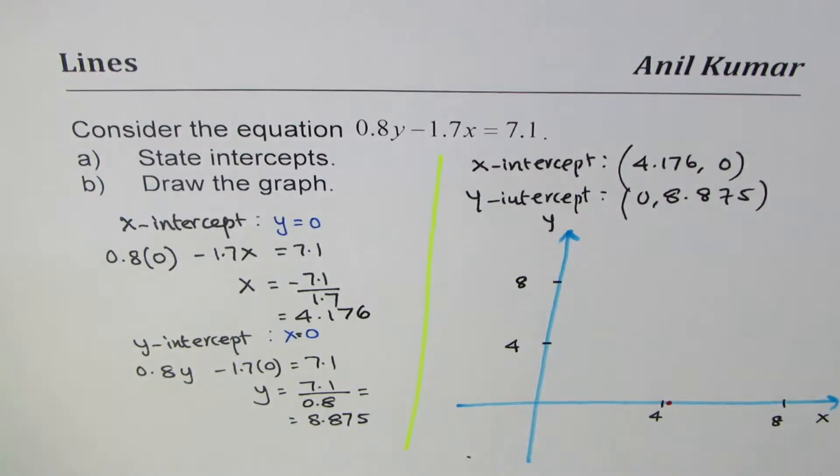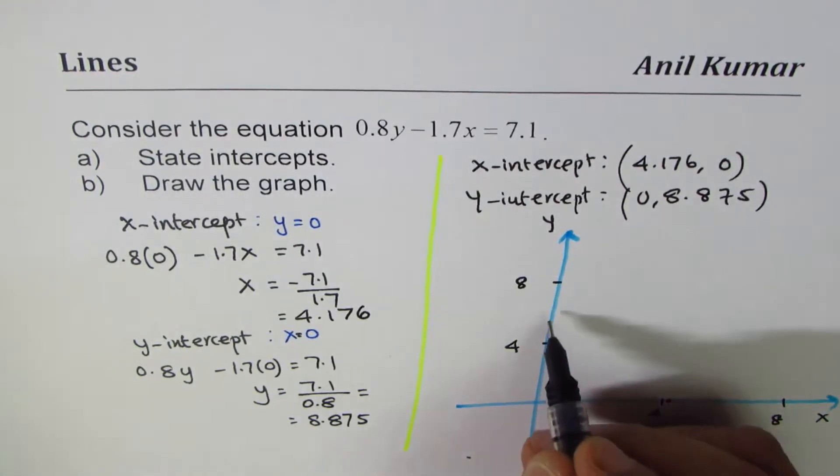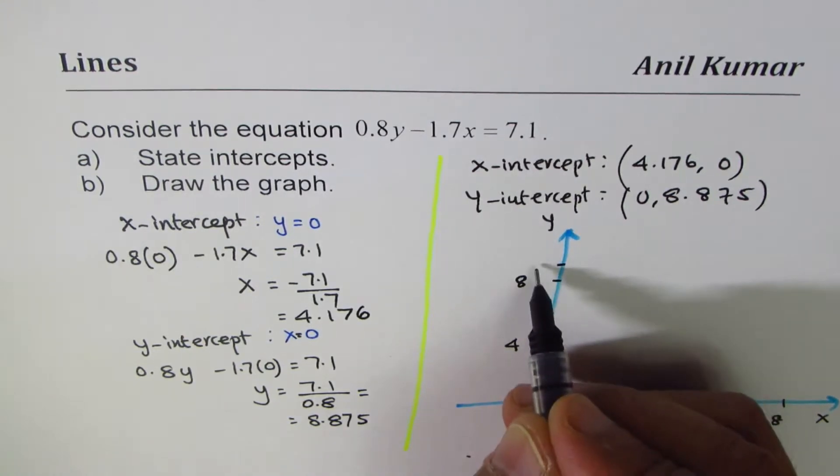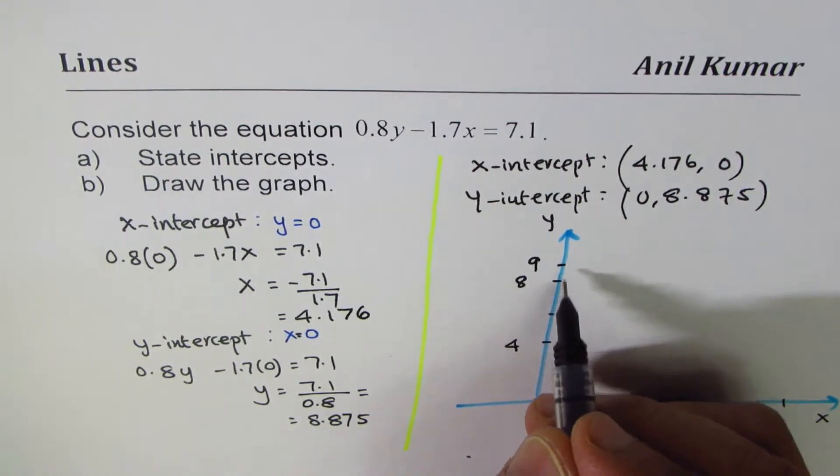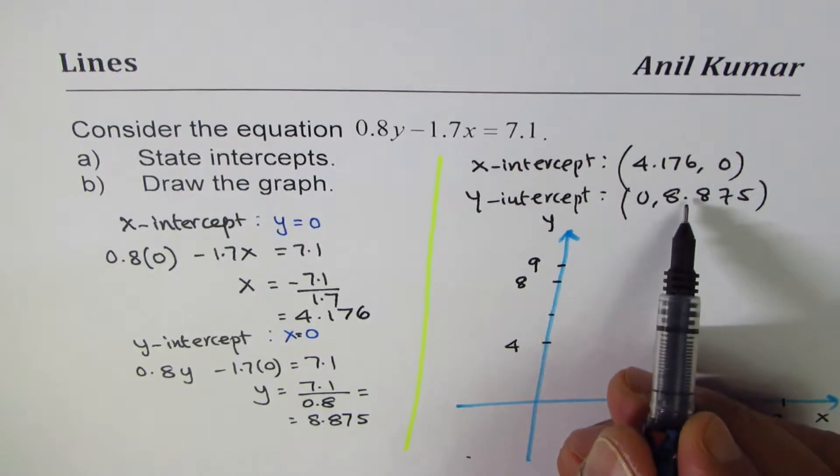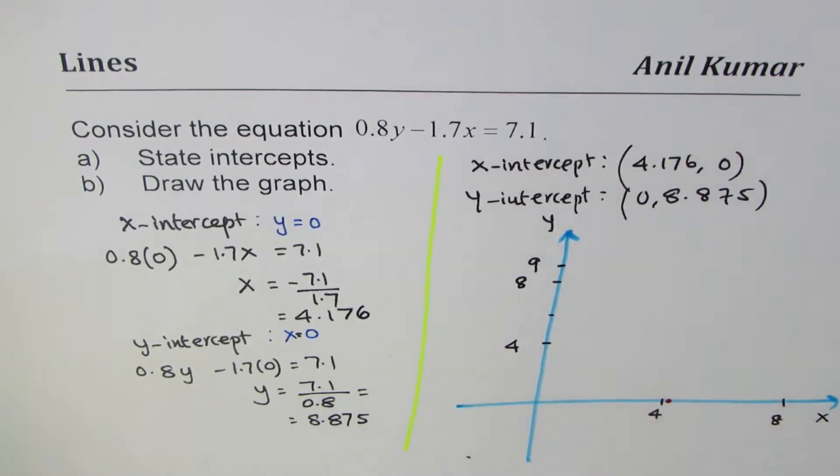So let's say this is 4, so this will be 6—2 units. Nine will be kind of 1 unit more, so this is 9. So it's very close to 9, and we can say that point is kind of here.